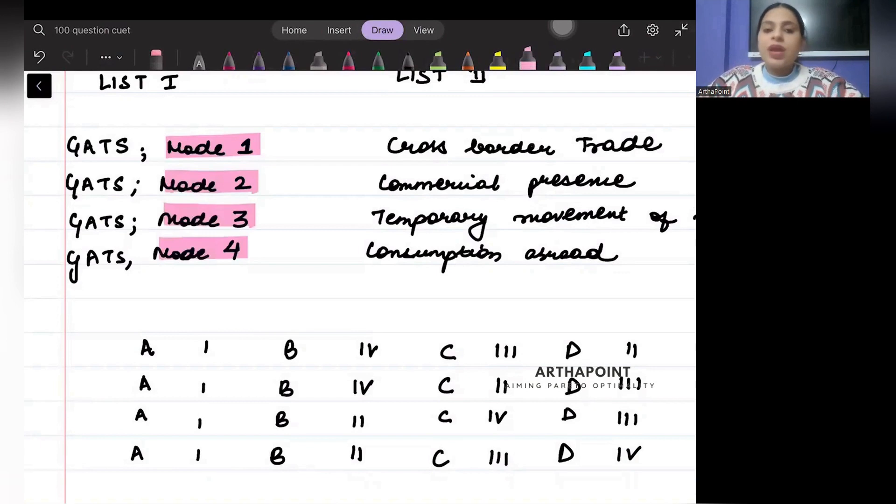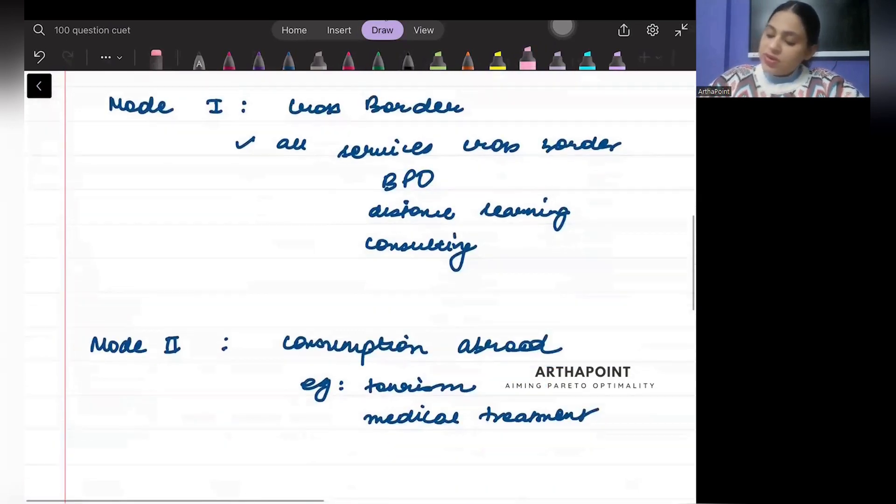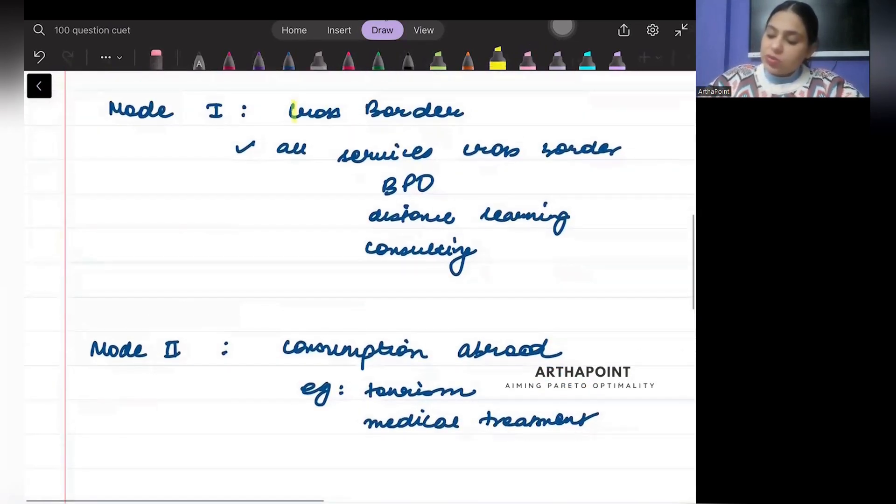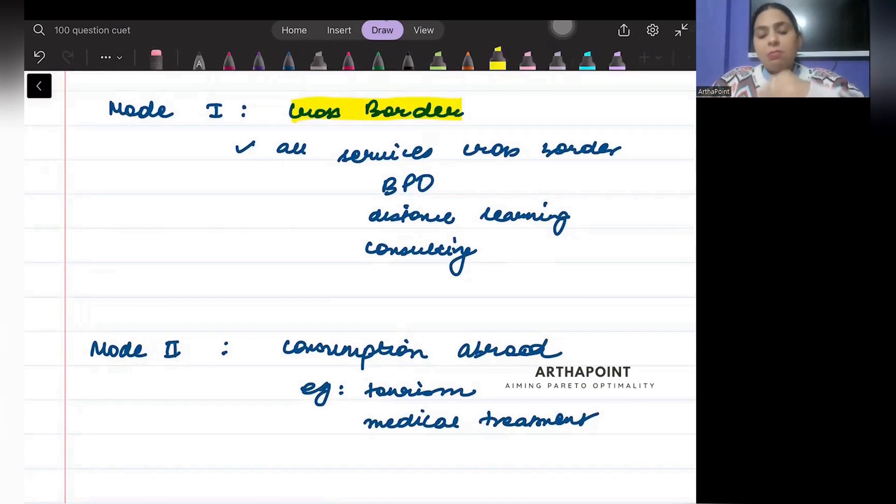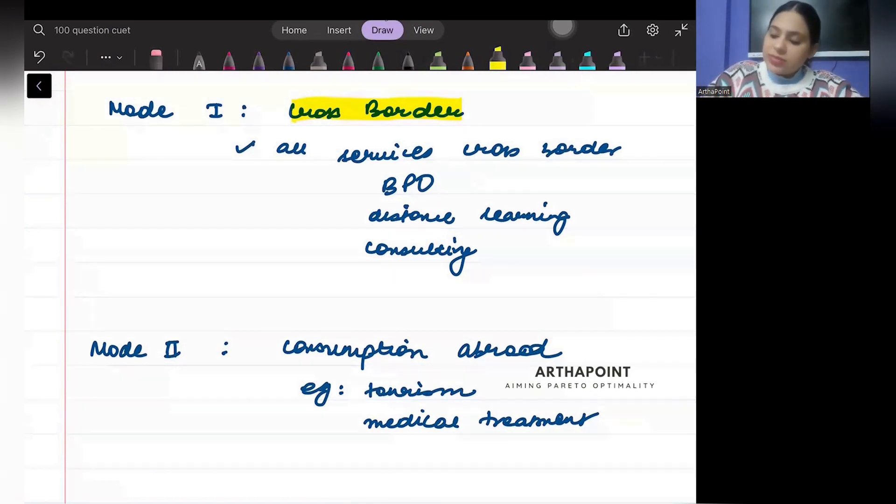Mode 1 is called cross-border mode. We are giving people our services like distance learning. My college is established in India and they are educating people, or consulting service, or BPO service. That is called Mode 1.